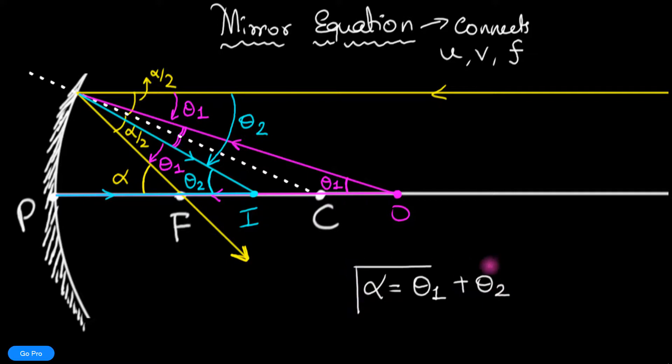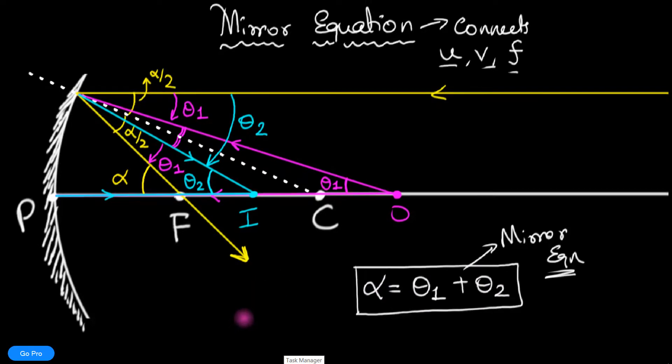Alpha equals theta 1 plus theta 2. And my dear friends, this is the mirror equation. Now, you might be thinking, wait, that's not a mirror equation, because the equation is supposed to connect u, v, and f, and I will do that in just one short step now. But I want you to look at the beauty of this equation. This equation is so elegant. Now I'm going to come back to the familiar equation.